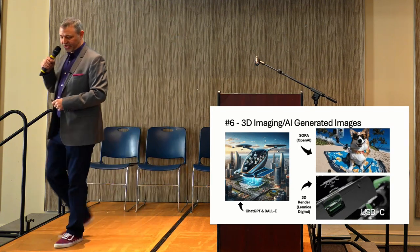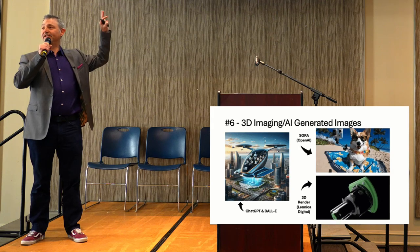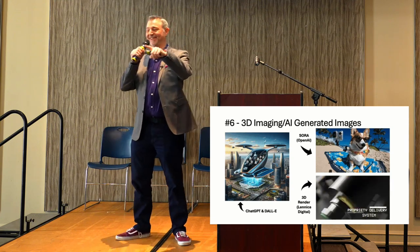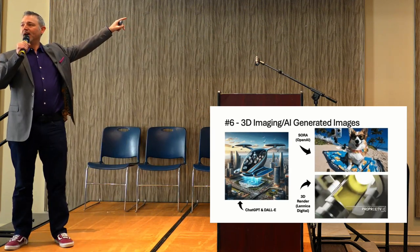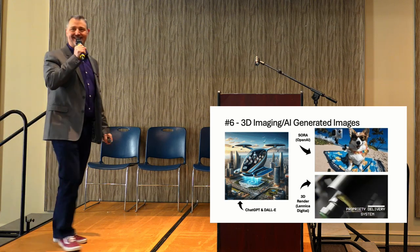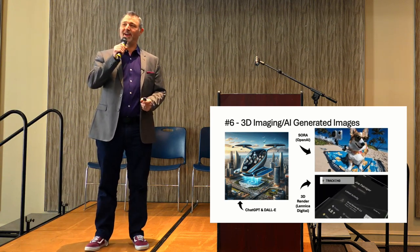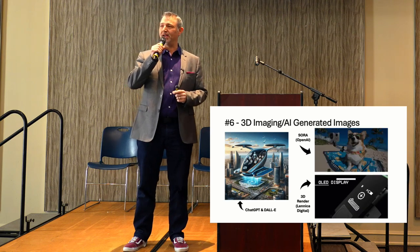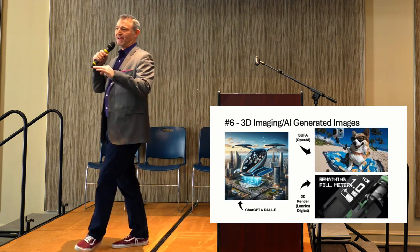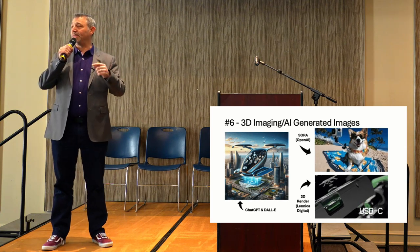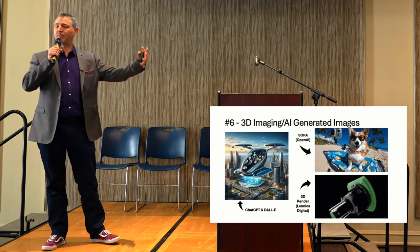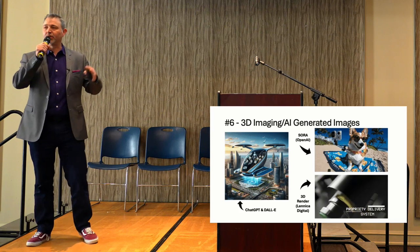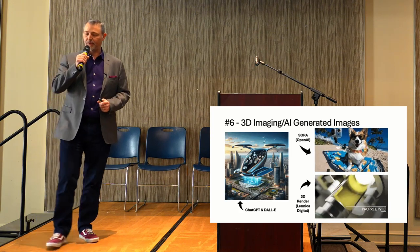Let's talk about 3D rendering and 3D imaging. This is a product rendering done by Lenica Digital — Liam Halsey is in the house, the artist is here. A company said: I need to show my product, but it doesn't exist yet. With a 3D rendering, it looks like it exists. You can see exactly what it does, how it looks, what's unique about it. You can create an image — even a moving or action image — of a product that doesn't exist yet, and get customer feedback. Those are examples of using 3D imaging or AI-generated imaging for prototyping or MVPs.